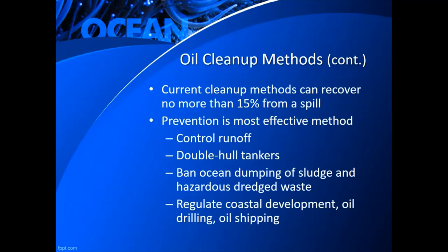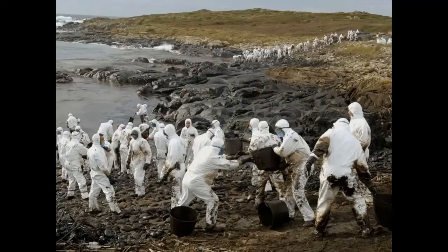Current cleanup methods can recover no more than 15% from a spill — meaning 85% of the oil cannot be recovered. So prevention is far and away the most effective method of dealing with an oil spill: control the runoff, build double-hull tankers so even if the outer hull gets breached the inner hull still holds the oil, and ban ocean dumping of sludge or hazardous dredged waste. We must regulate coastal development, oil drilling, and oil shipping. Here's a scene after the Prestige tanker cut in half, spilling more than 70 million liters of oil off the coast of Spain in 2002 — it leaked oil from its resting place on the seabed for many years to come.